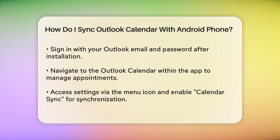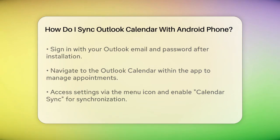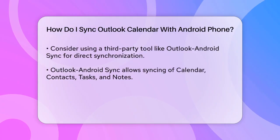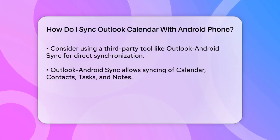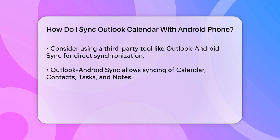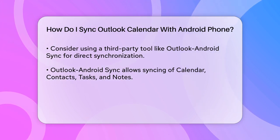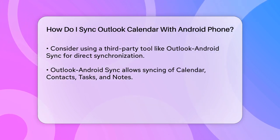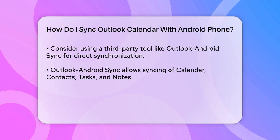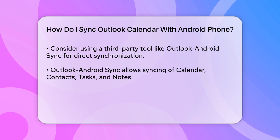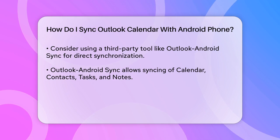Another method involves using a third-party sync tool. For example, you can use Outlook Android Sync, which allows you to synchronize your Outlook data directly with your Android device without needing a cloud service. This tool syncs your Outlook calendar, contacts, tasks, and notes with your Android's native apps. To use it, you simply need to get the apps, run and pair them, and then start synchronizing.